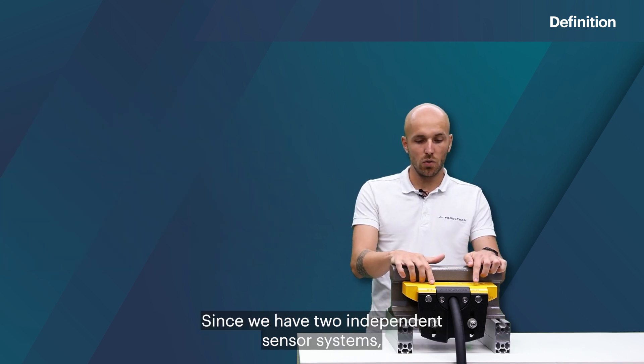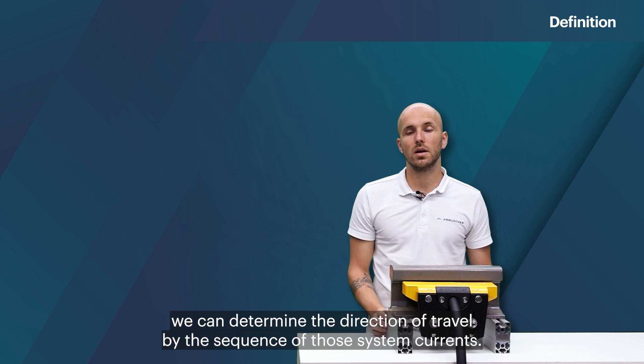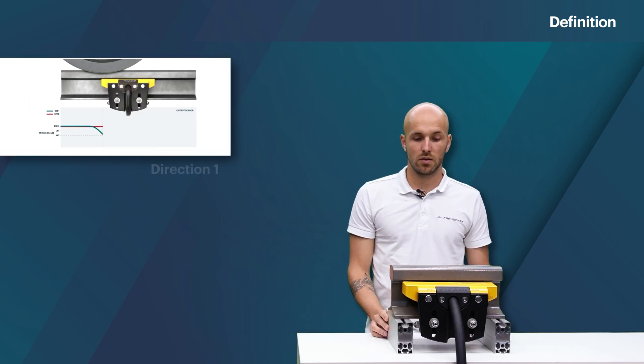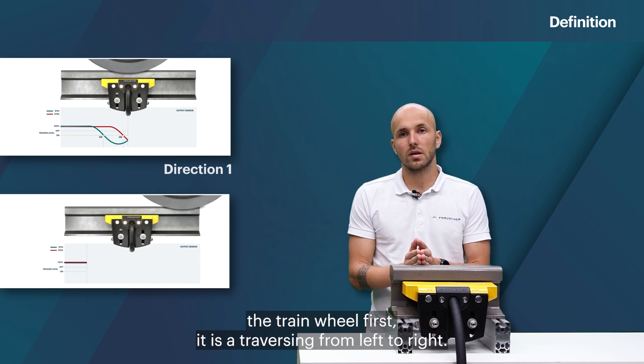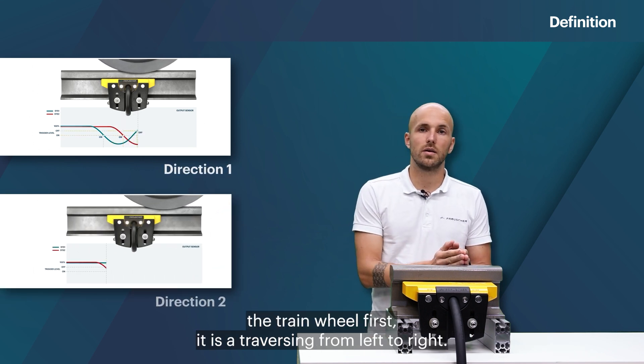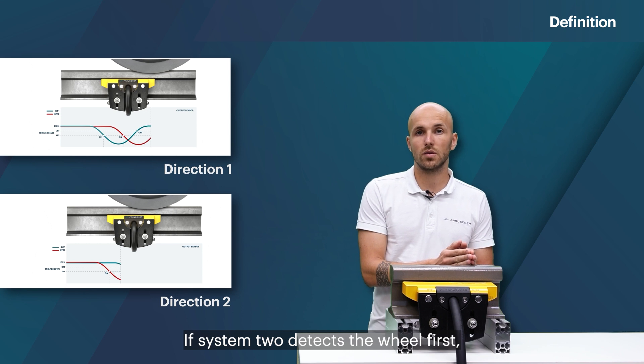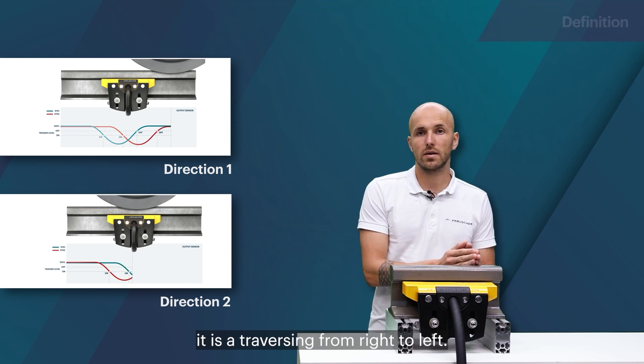Since we have two independent sensor systems we can determine the direction of travel by the sequence of those system currents. So if system 1 detects the train wheel first it is a traversing from left to right. If system 2 detects the wheel first it is a traversing from right to left.